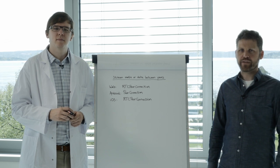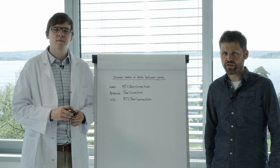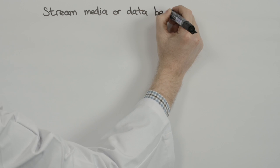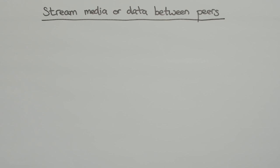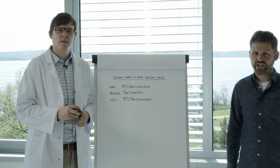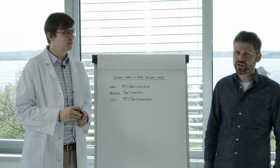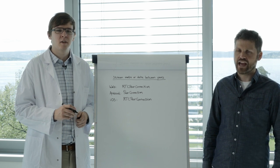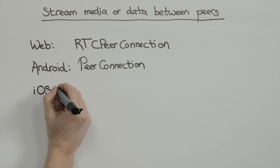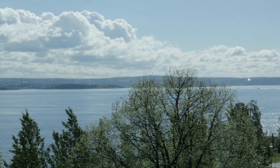Once we get media streams from the camera and mic, we need to set up a network connection to transmit the streams to other users. To do this on the web, we have RTCPeerConnection, the JavaScript API for audio and video communication — this is the core of WebRTC. The PeerConnection API handles signal processing, codec handling, peer-to-peer communication, security, bandwidth management, and so on. On Android, the equivalent API is PeerConnection, and on iOS it's RTCPeerConnection.